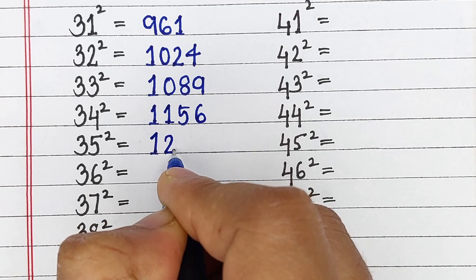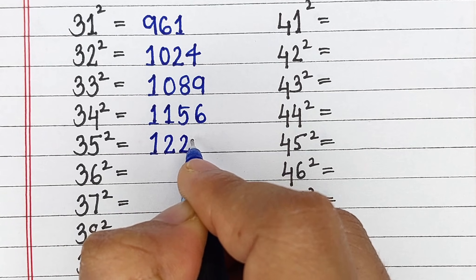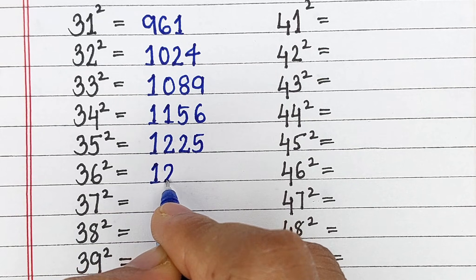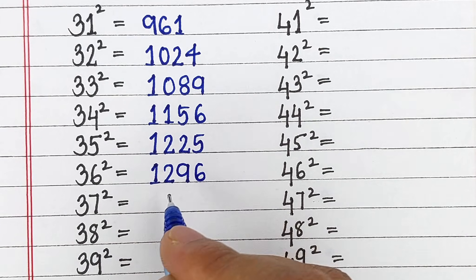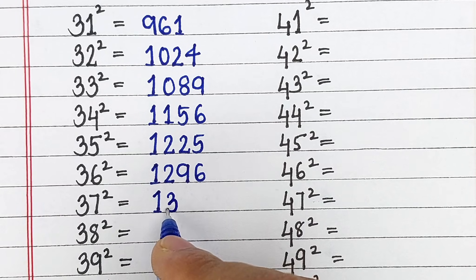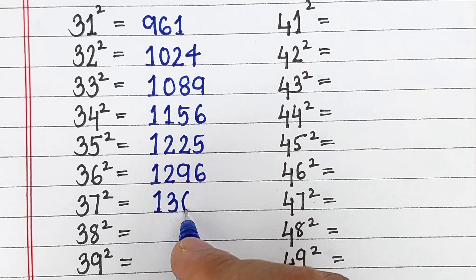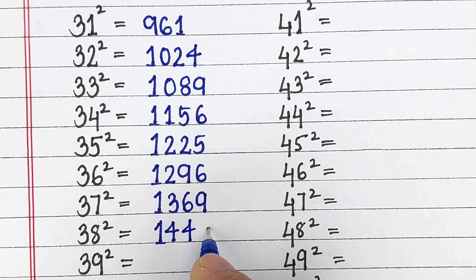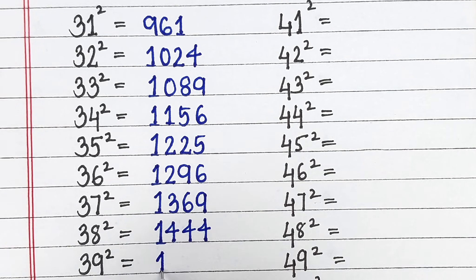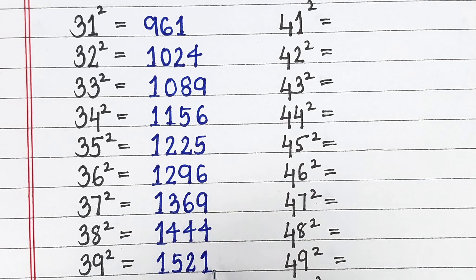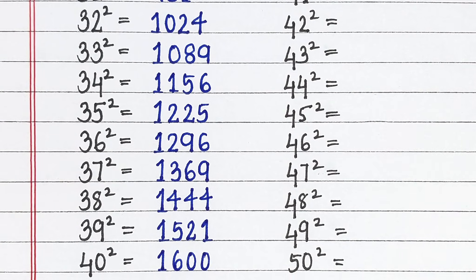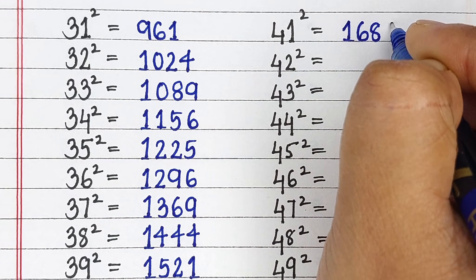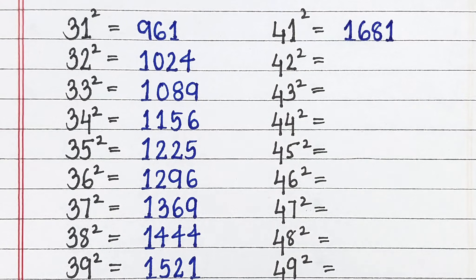Square of 35 is 1225, square of 36 is 1296, square of 37 is 1369, square of 38 is 1444, square of 39 is 1521, square of 40 is 1600. Next up we have square of 41, square of 41 is 1681.